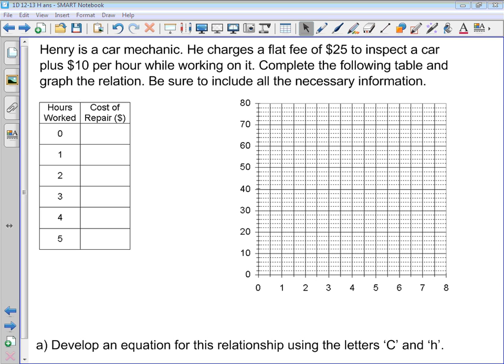Let's take a look at our second example here in box H. We're told that Henry is a car mechanic and he charges a flat fee of $25 to inspect a car plus $10 per hour while working on it. Complete the following table and graph the relation. Be sure to include all the necessary information.